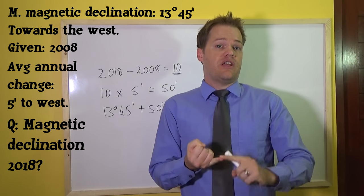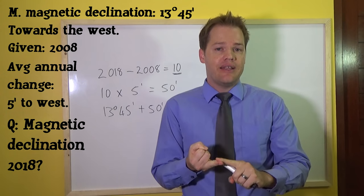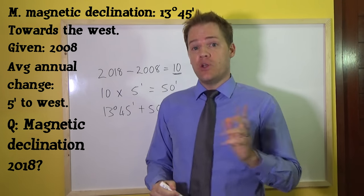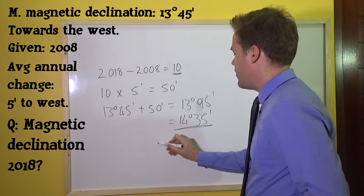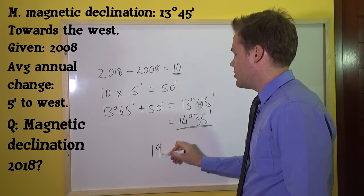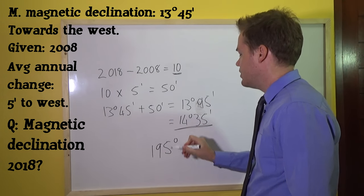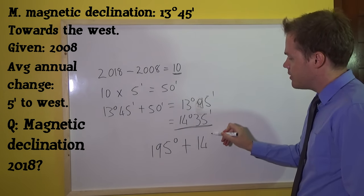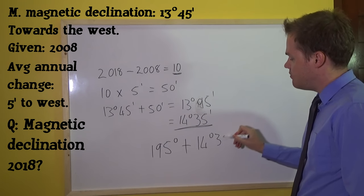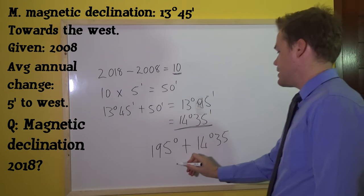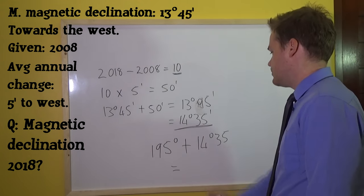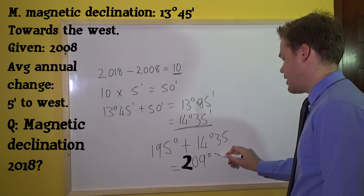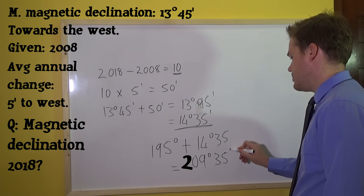The question was how to calculate a magnetic bearing. If you understand how to do a normal bearing and how to calculate the magnetic declination, it shouldn't be a problem at all. All you do is the following: if your normal bearing is, for argument's sake, 195 degrees, you simply add the magnetic declination — 14 degrees 35 minutes — and it will give you a total of 209 degrees and 35 minutes.